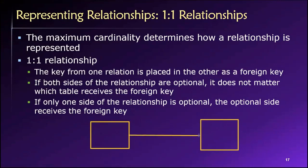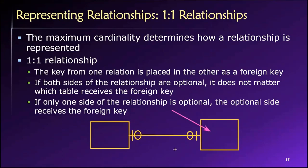Let me draw some pictures so we can understand this based on our knowledge of database symbols and cardinalities. If we have two tables related to each other in a one-to-one relationship — maximum cardinality of one on both sides — and the minimum cardinality is zero on both sides, then it doesn't really matter where we put the foreign key. We could drop it into either table and either way works just fine.